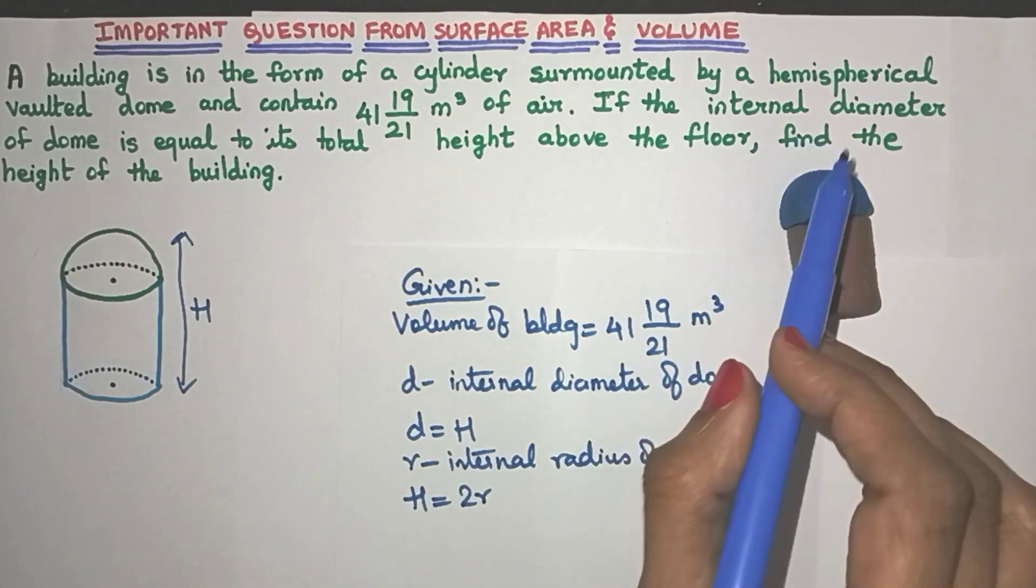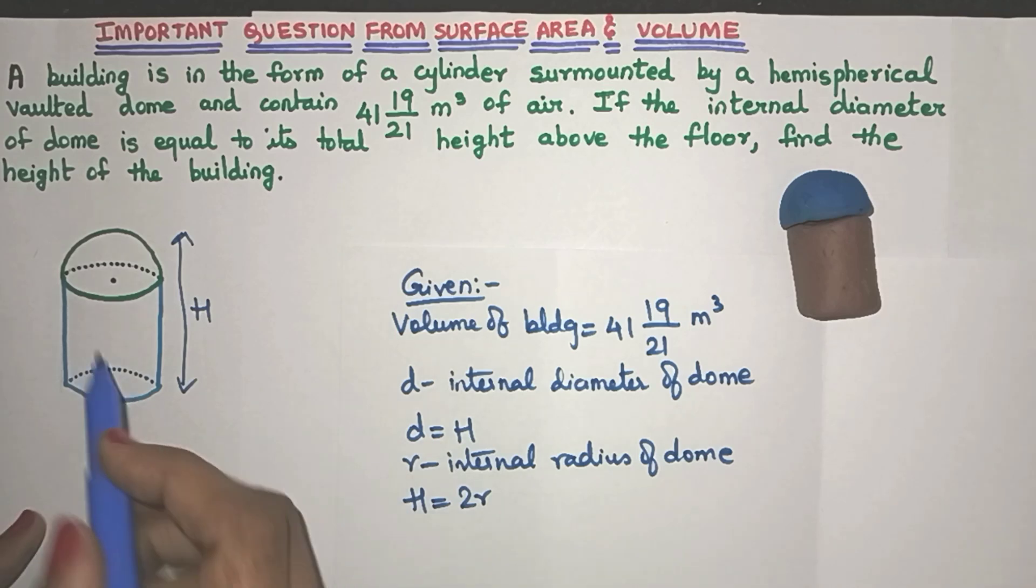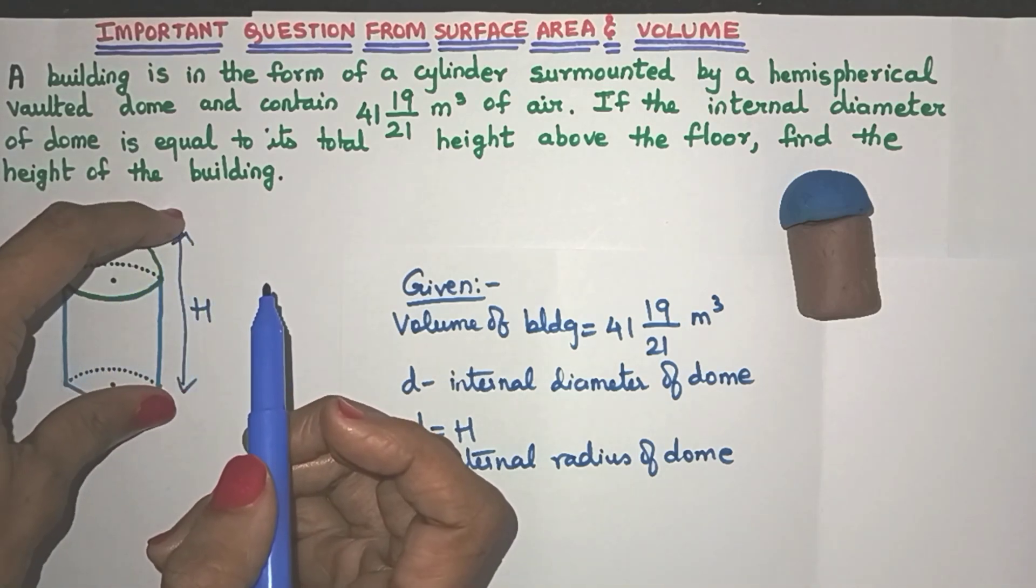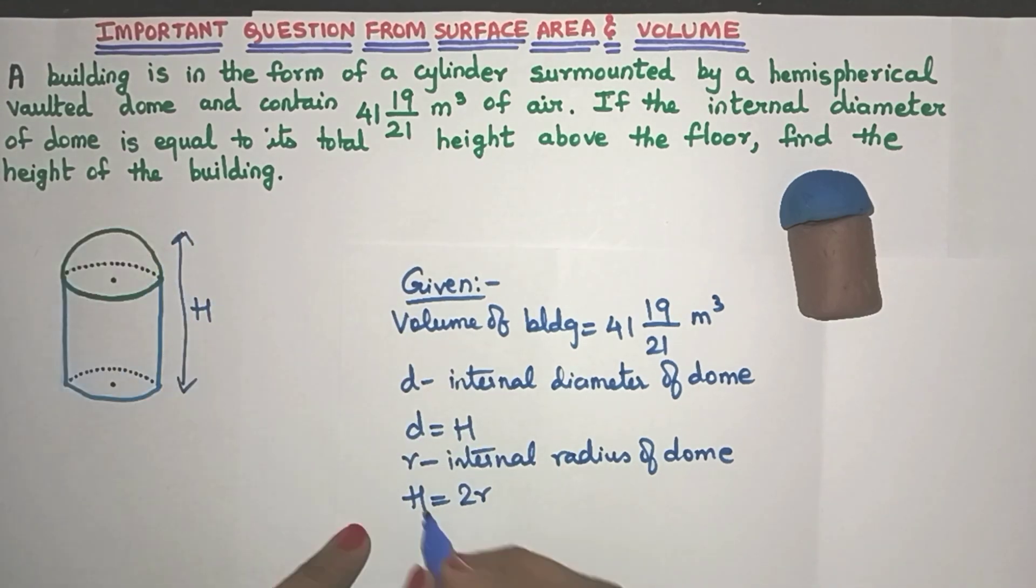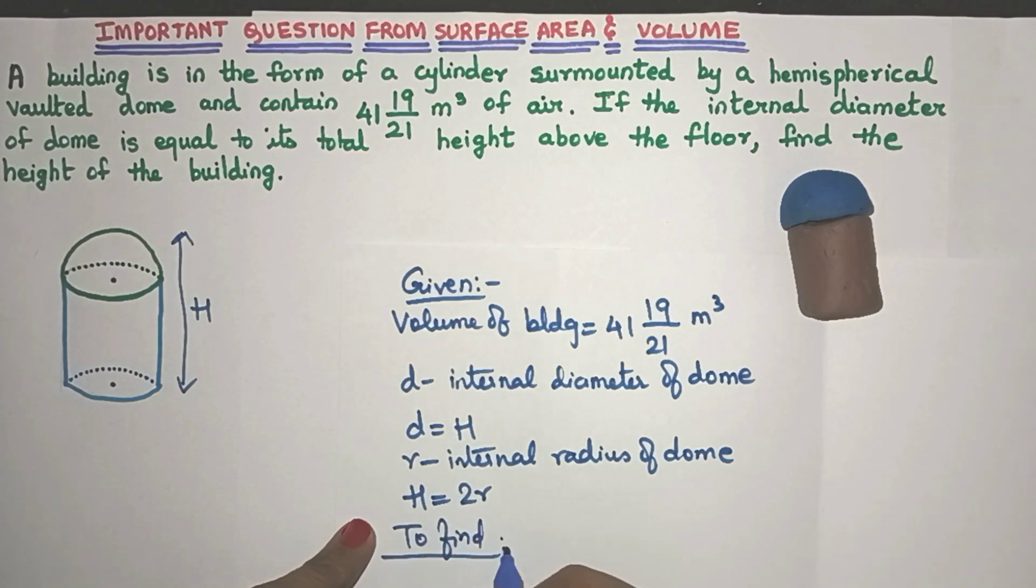Now what are they asking for? Find the height of the building. So what are they asking for? This entire height. That means they are asking for capital H. So what do we have to find? Yes, we have to find capital H.